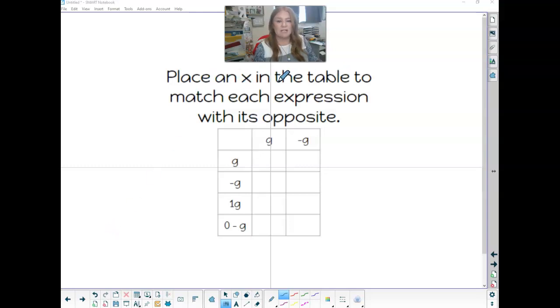Place an x in the table to match each expression with its opposite. If I had the number 4, the opposite of that is negative 4. They're the same distance from 0, but on opposite sides of 0.